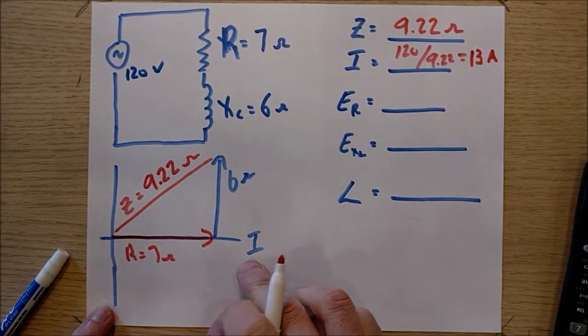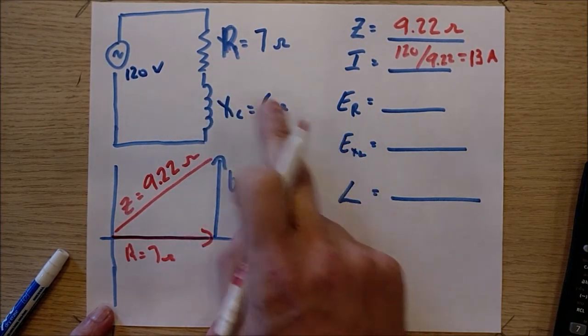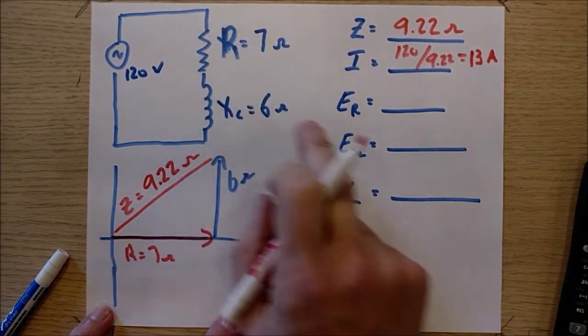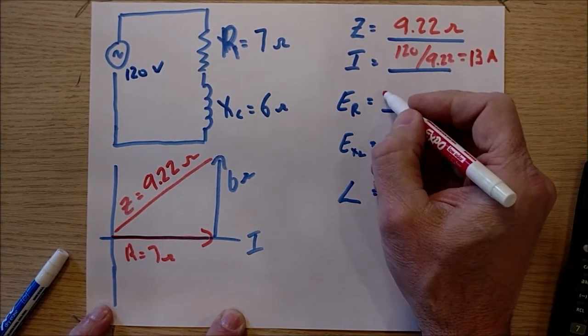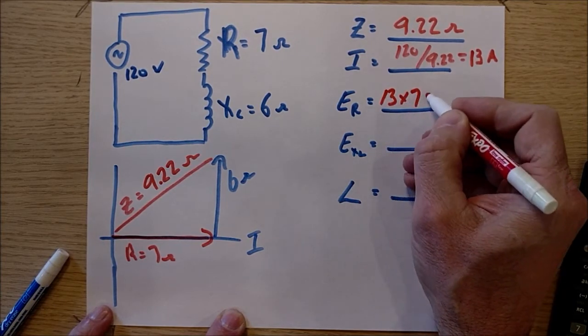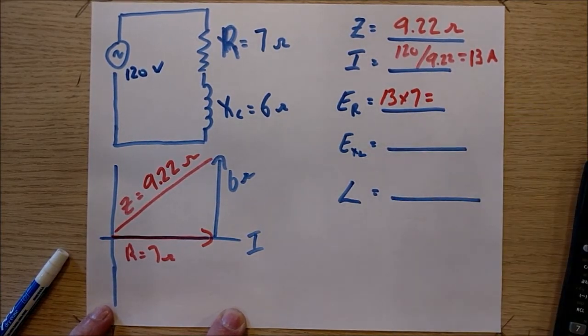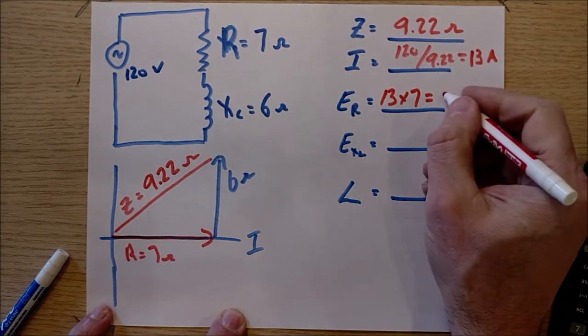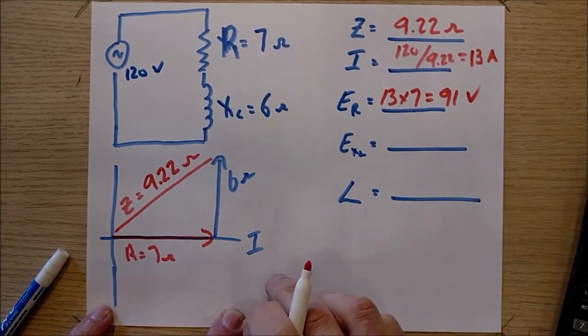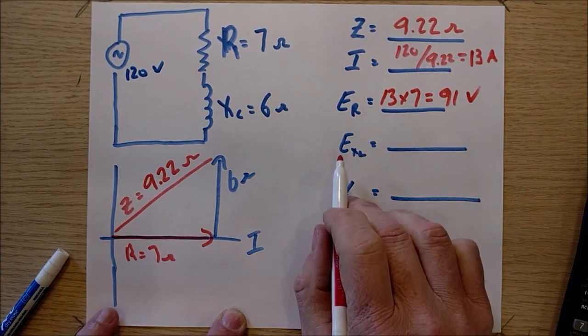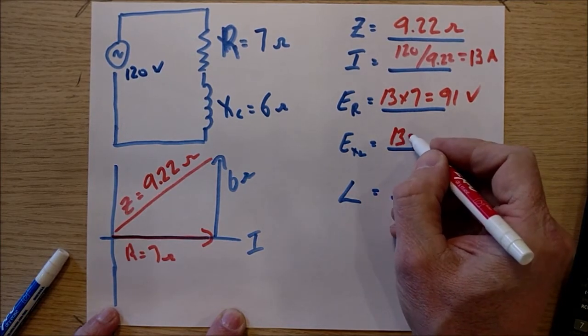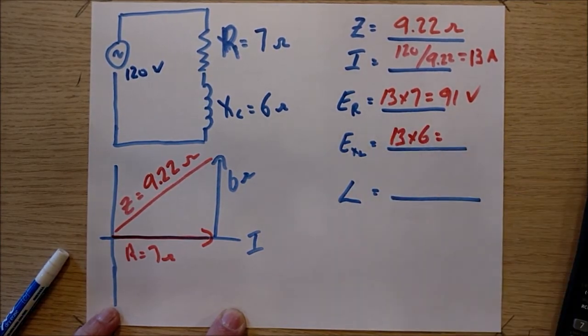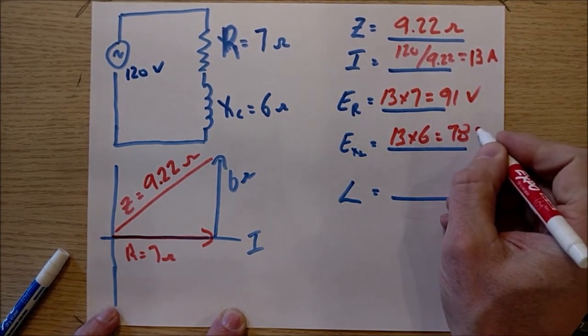The next thing we're going to calculate is the voltage dropping across the resistor. It's going to use Ohm's law. ER is going to be I times R. And so in this case, it's going to be 13 times 7. 13 times 7 equals 91 volts. EXL is going to be I times XL. And so it's going to be 13 times 6 equals 78 volts.